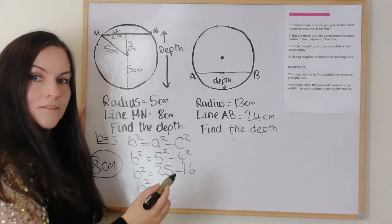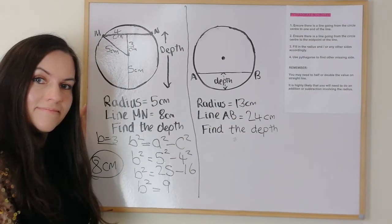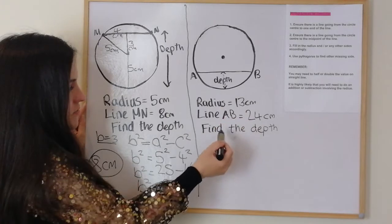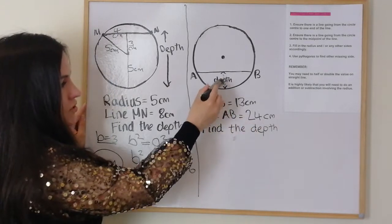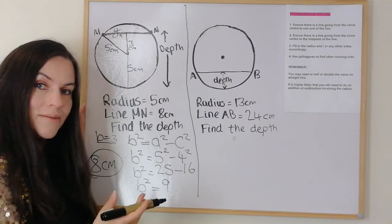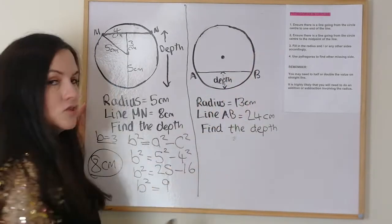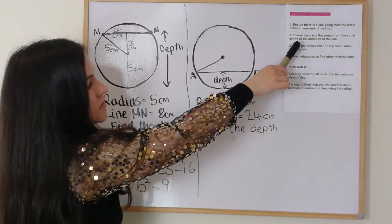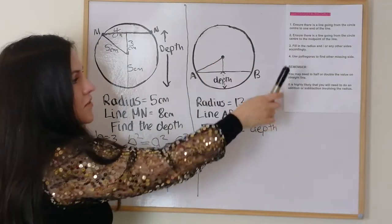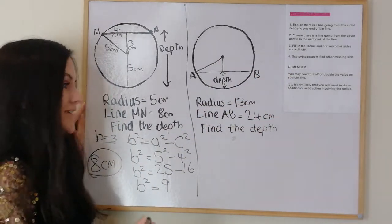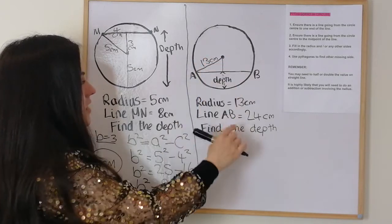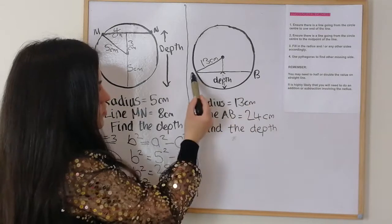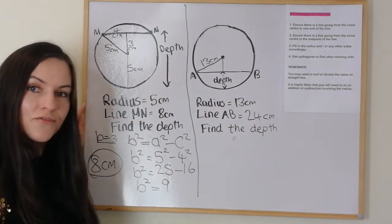I'm going to mix it up a bit with the next example. It's a little bit different — instead of looking for the large part, we're looking for the smaller part. We're given that the radius is 13 centimetres and that line AB is 24 centimetres, and we're trying to find the depth. Going through our four-step guide: step one, draw a line from the circle centre to one end. Step two, draw a line from the circle centre to the midpoint. Step three, fill in the sides — the radius is 13, and since AB is 24, we half it to get 12.